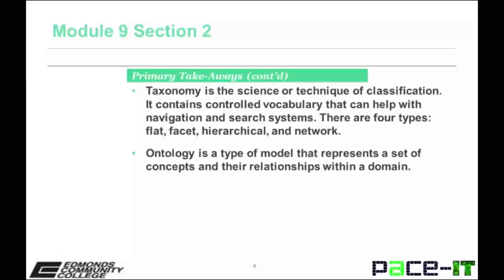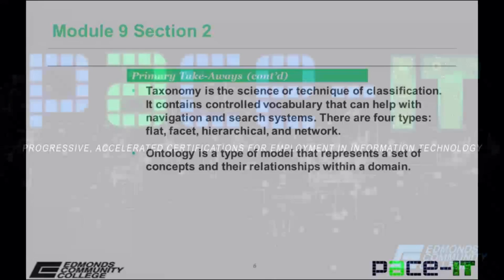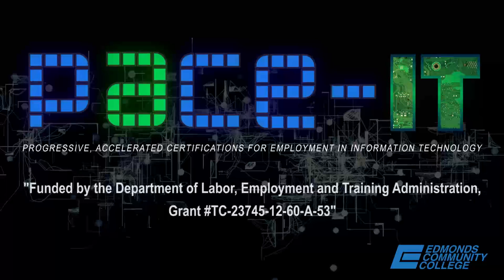Taxonomy is the science or technique of classification. It contains controlled vocabulary that can help with navigation and search systems. There are four types: flat, facet, hierarchical, and network. Ontology is a type of model that represents a set of concepts and the relationships within a domain. There are four types of ontology.